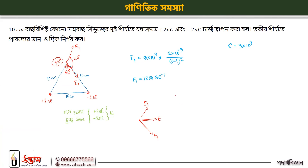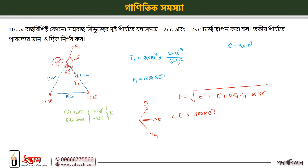This is the basic theory of vector theory. u1 squared plus u1 squared plus 2 into u1 into u1 cos 120 degrees. This is how u1 squared plus 2 into u1. This is 8 Newton per Coulomb.